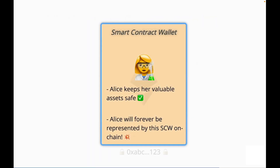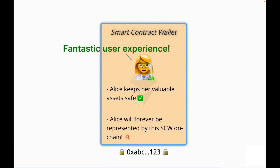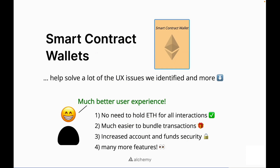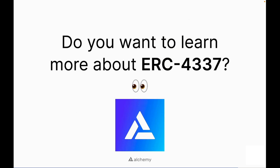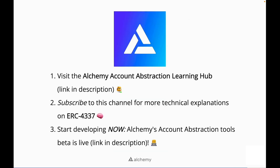Alice can now keep her valuable assets safe and she will forever be represented by the smart contract wallet on chain, which is fantastic user experience. Essentially, smart contract wallets help solve a lot of the UX issues we identified and more. Do you want to learn more about ERC-4337? Visit the Alchemy Account Abstraction Learning Hub, subscribe to this channel for more technical explanations on ERC-4337, and start developing now — Alchemy's Account Abstraction Tools Beta is live!